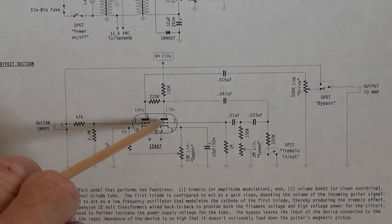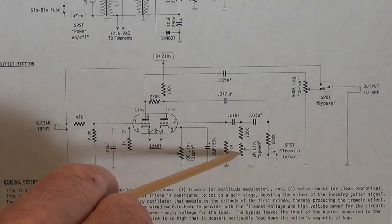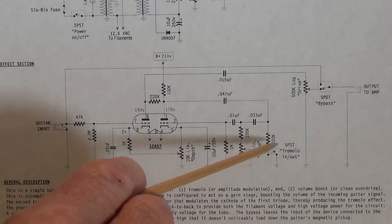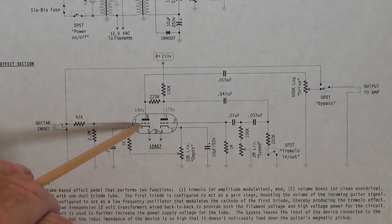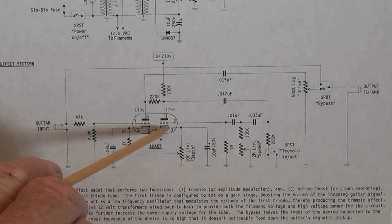Our tremolo circuit will have a depth control, a speed control, and also an on-off control so that we can operate the unit with just the boost or just the tremolo or both.